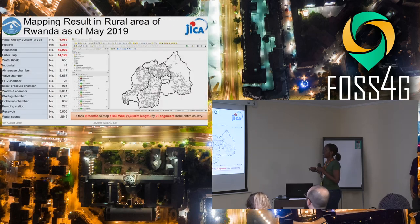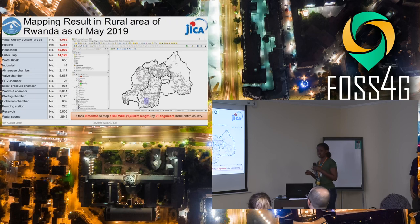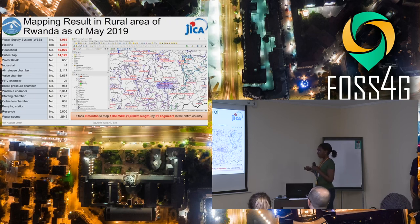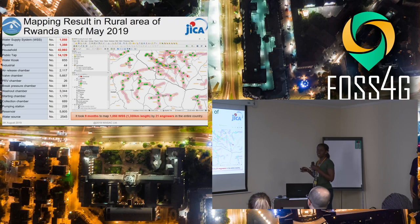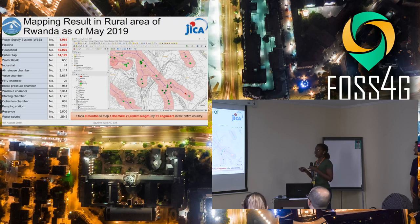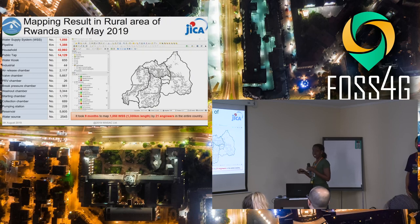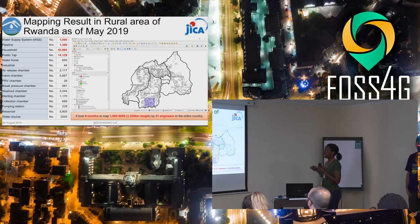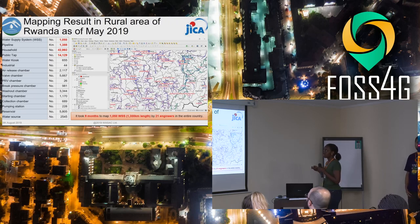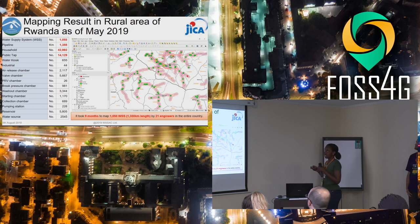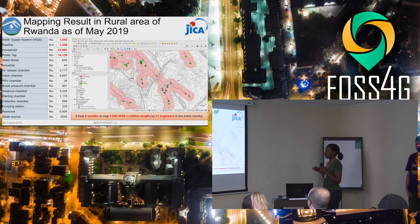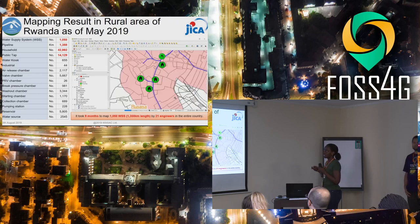These are the assets we collected. We went to each water supply system from the source and captured all infrastructure components on each system with their attributes — what they were built for, their equipment, discharge, materials, etc. We currently have about 1,058 water supply systems and the length of pipeline is 1,388 kilometers.